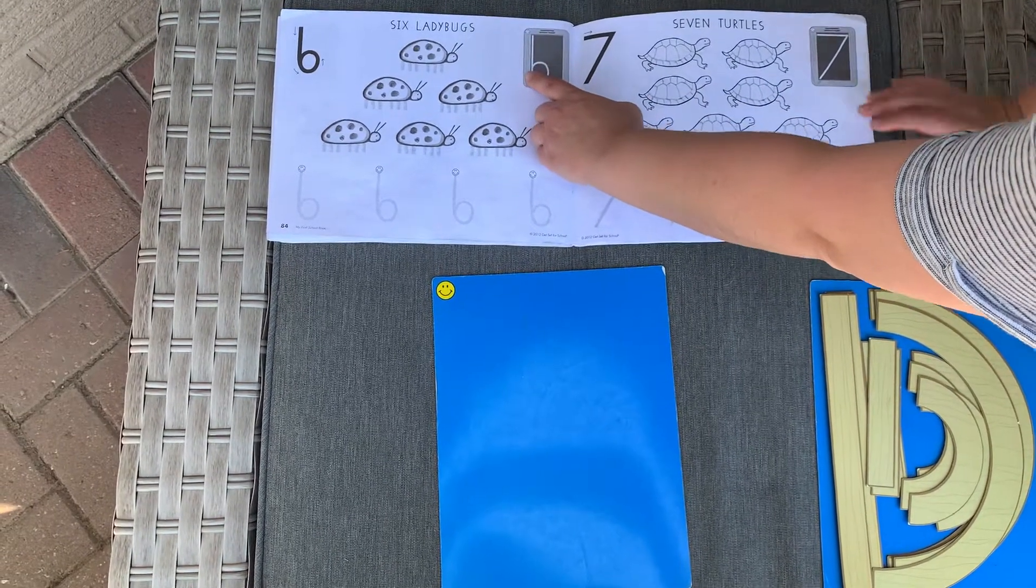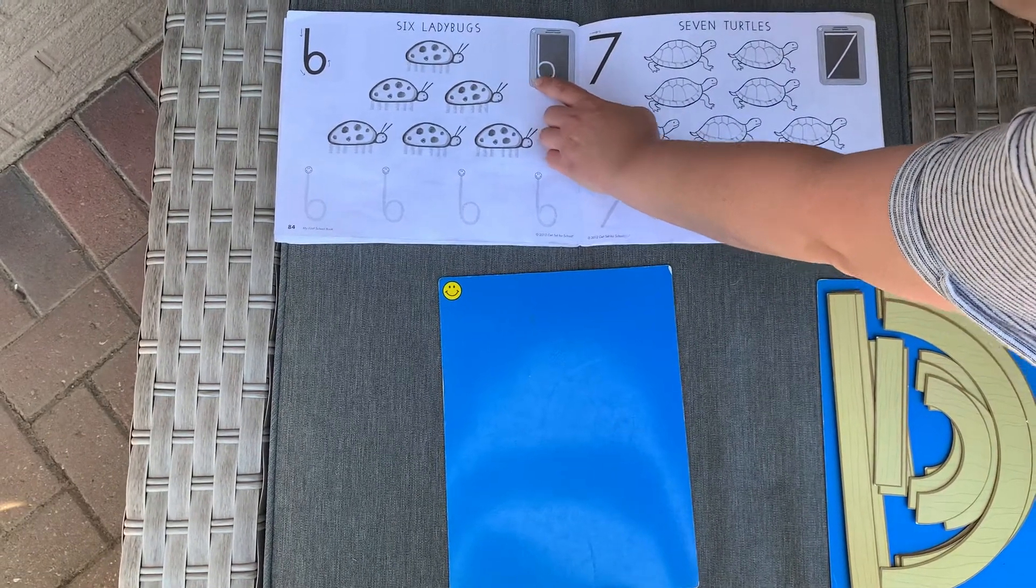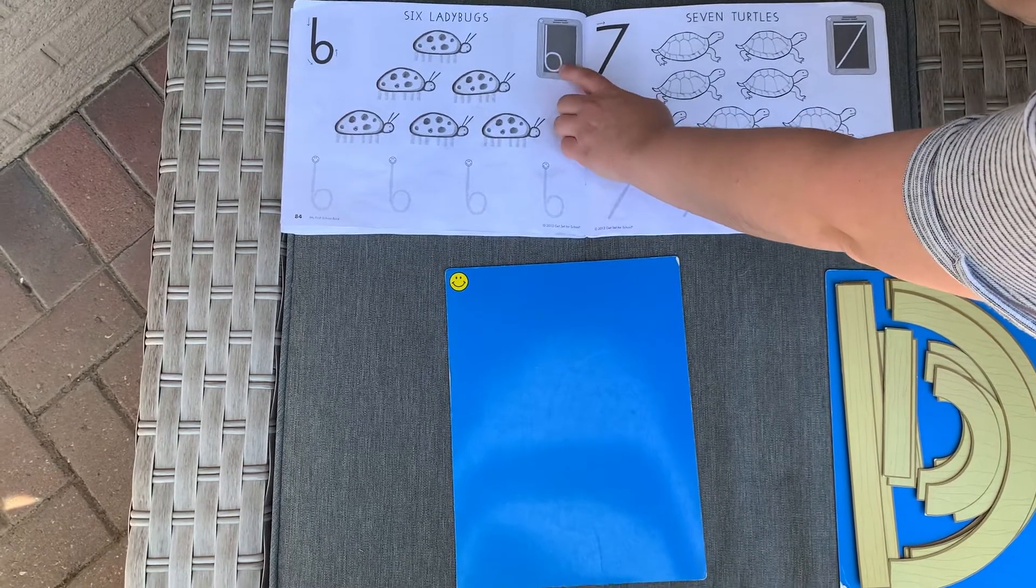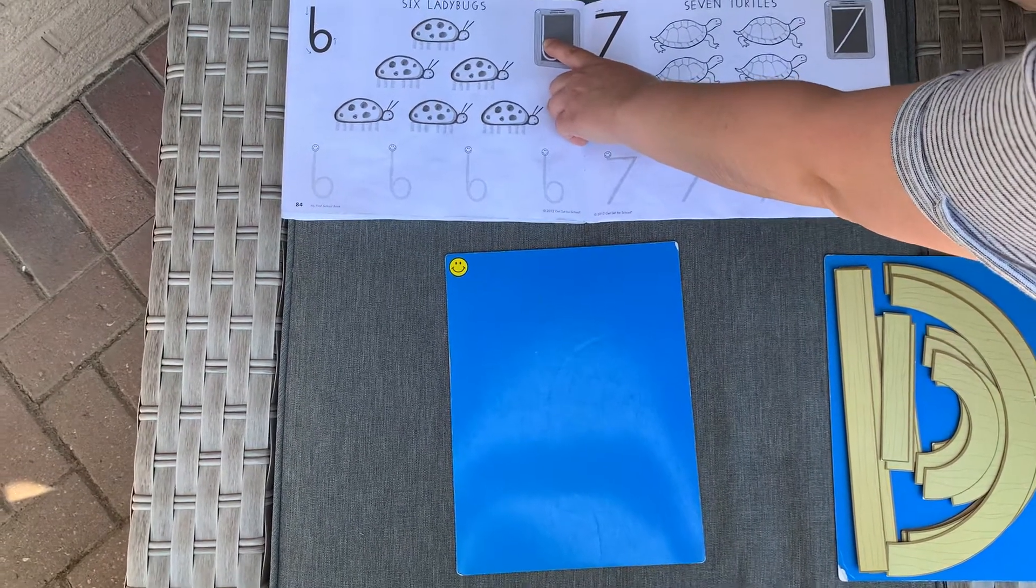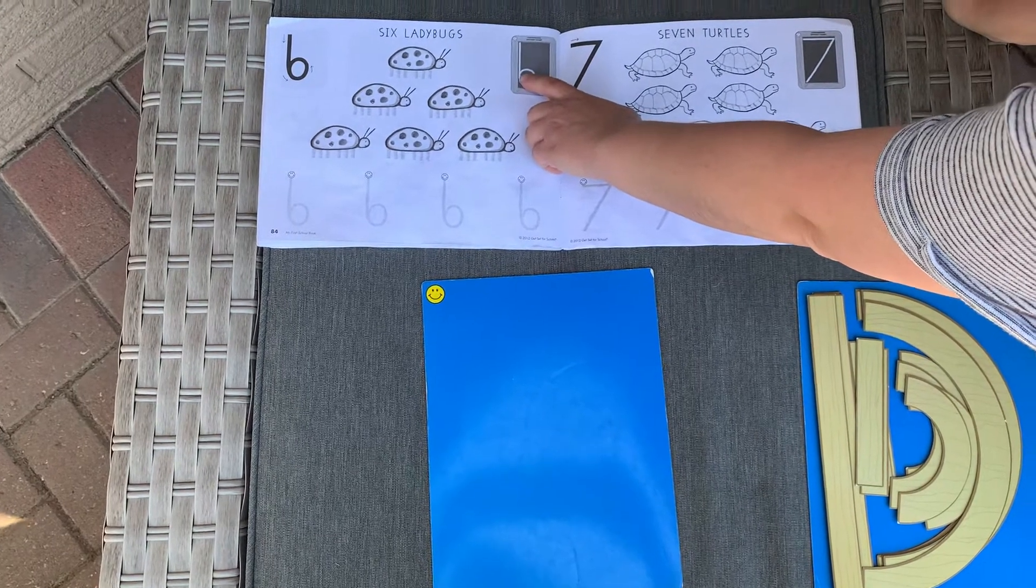You're going to make a big line down, but instead of it being all the way down, you're going to stop and curve around. And that is your number six.